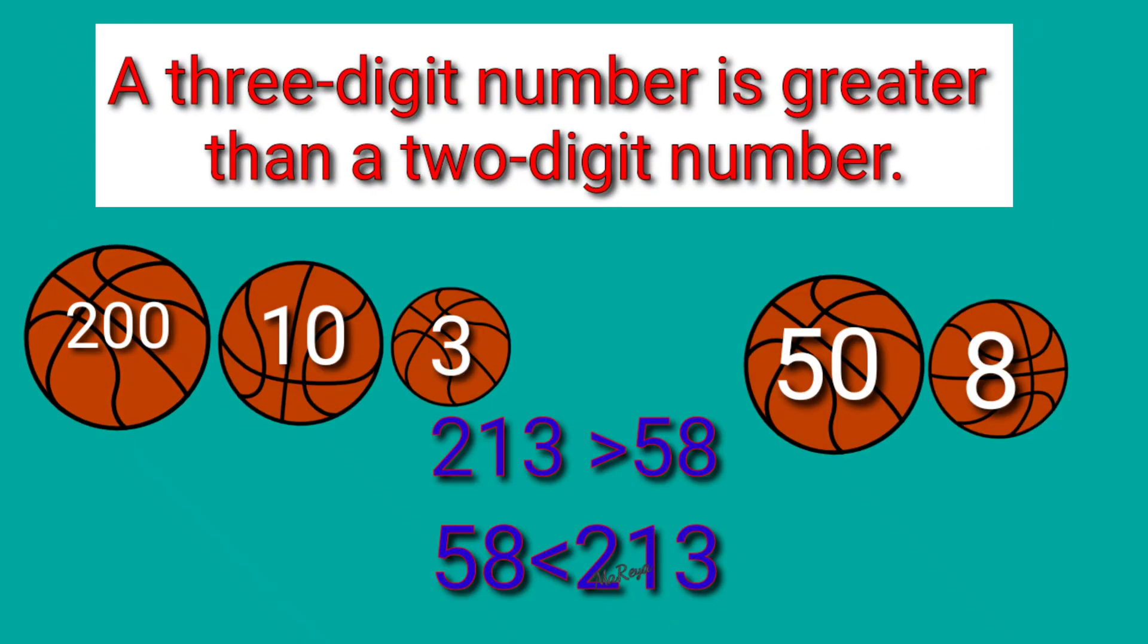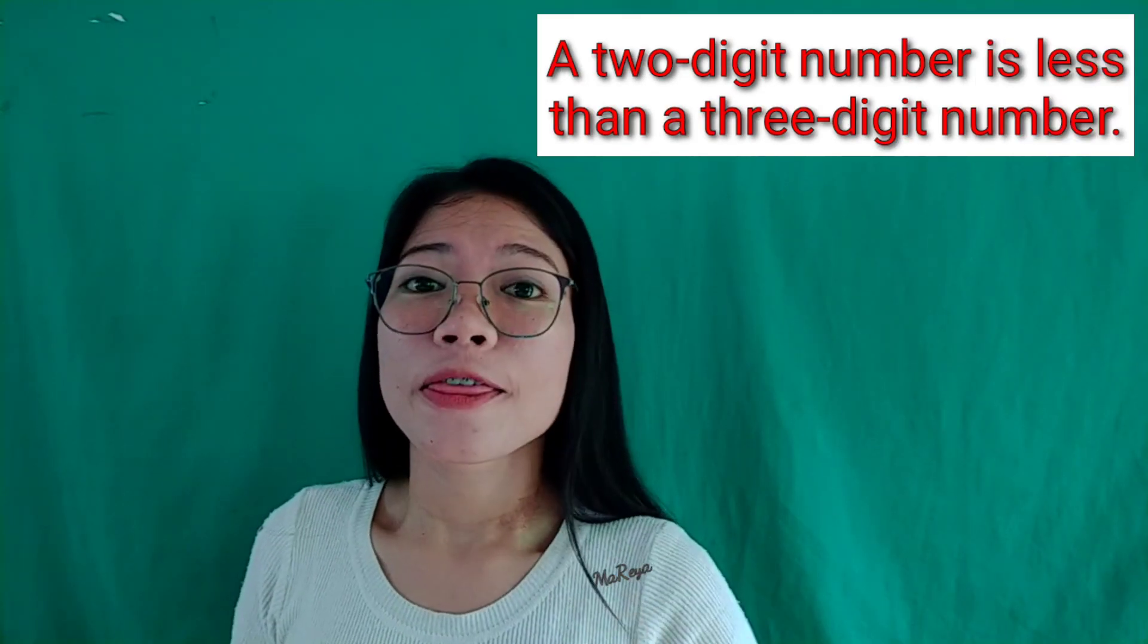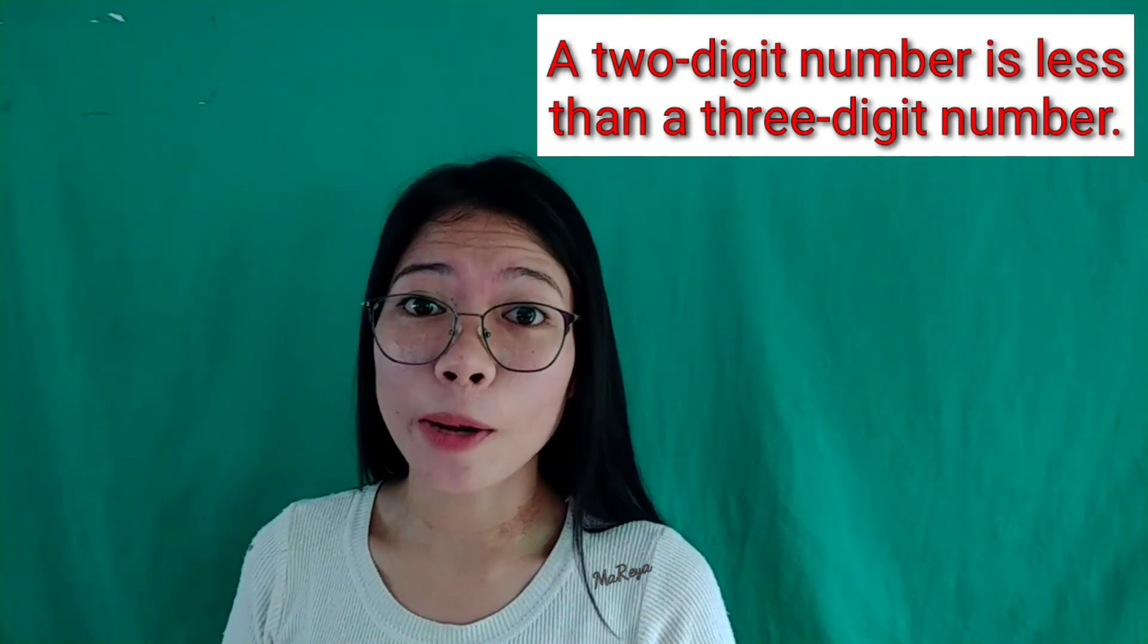A three-digit is greater than a two-digit, and a two-digit number is less than a three-digit number.